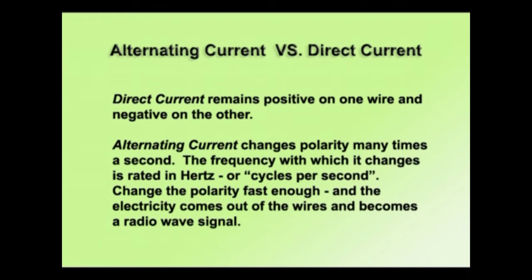You also need to know the basic difference between AC and DC – alternating current electricity and direct current electricity. With direct current, the positive remains on the positive wire, and the negative on the other; the polarity never changes. With alternating current, it changes polarity many times a second from positive to negative, and the frequency with which it does this is rated in Hertz, or cycles per second. If you change the polarity fast enough in an AC wire, it will actually radiate in the form of a radio wave.